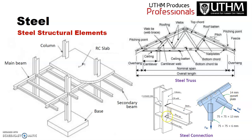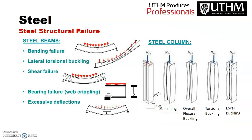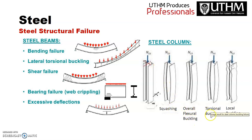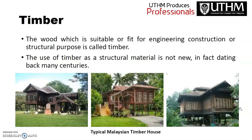Steel beam failure modes include bending failure, lateral torsional buckling, shear failure, bearing failure, and excessive deflection. Steel column failure modes include squashing, overall flexural buckling, torsional buckling, and local buckling.